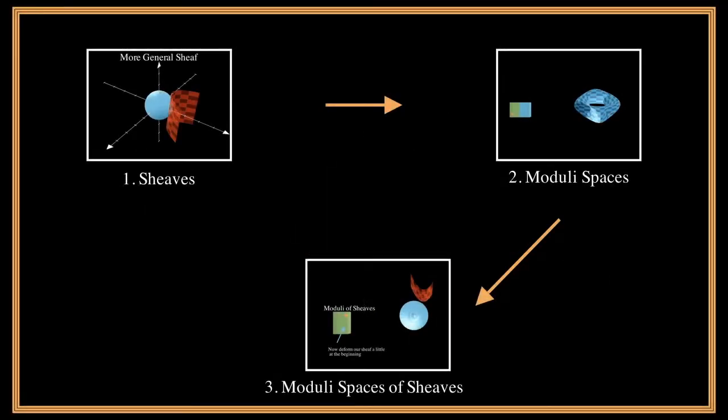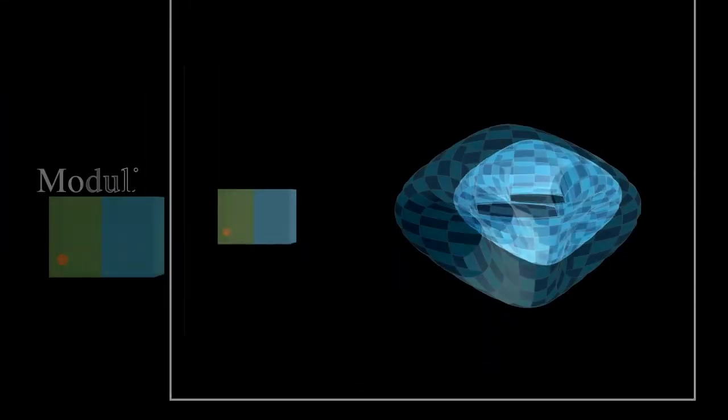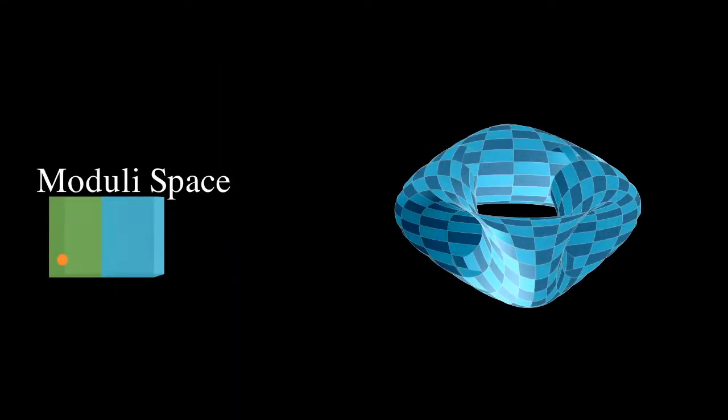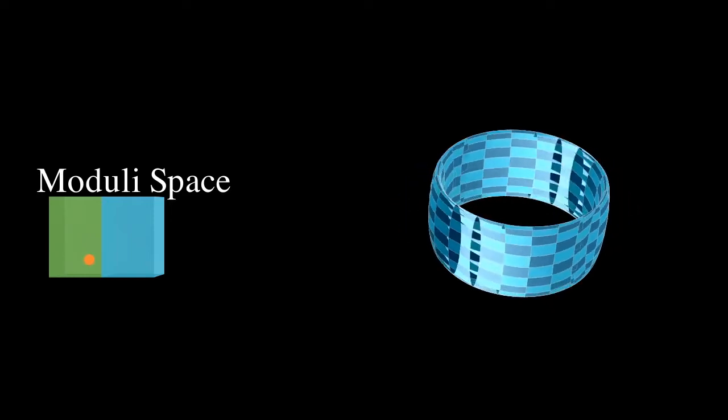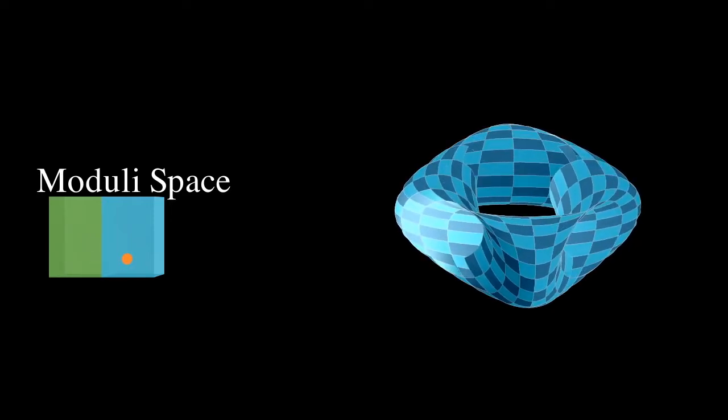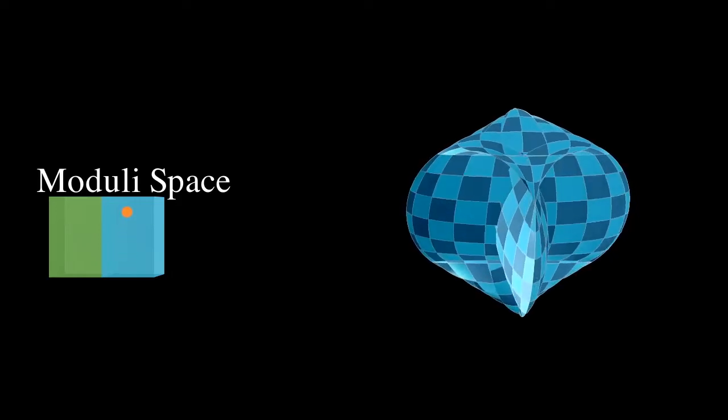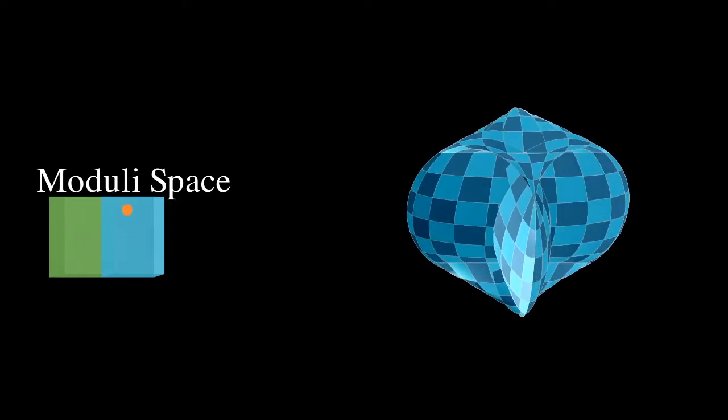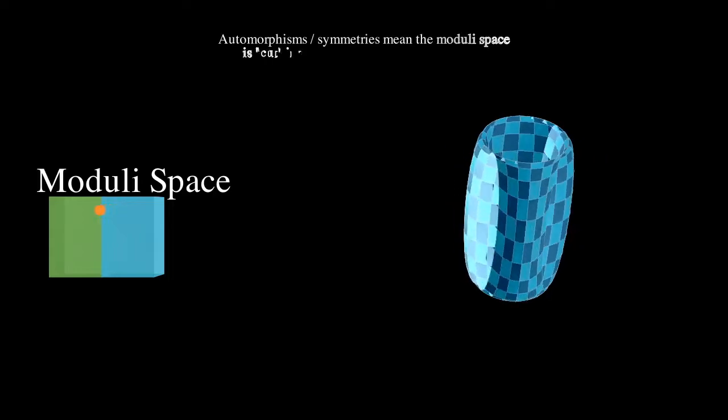Turning our attention to what may seem at first like an identical notion, moduli spaces are a really powerful tool that tend to pop up in a lot of places you wouldn't expect them to. But the idea really isn't that complicated. If you give me a class or type of object like pseudotori, for example, suppose you wanted to make a shape where every point represented one of your objects.